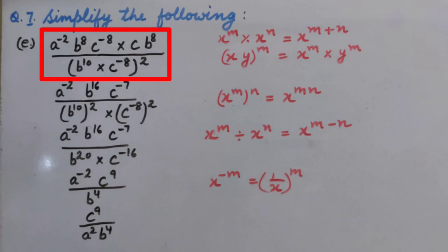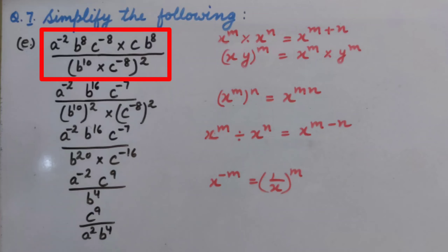Part E: A raised to the power minus 2, B raised to the power 8, C raised to the power minus 8, multiplied by CB raised to the power 8 upon B raised to the power 10, multiplied by C raised to the power minus 8, whole raised to the power 2.